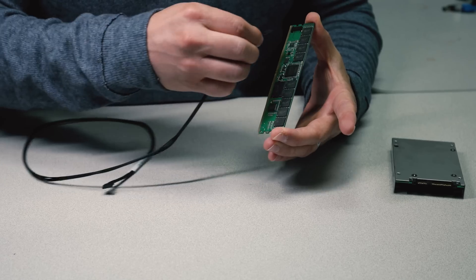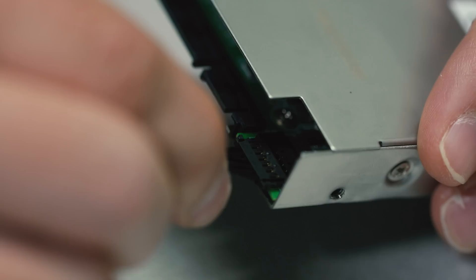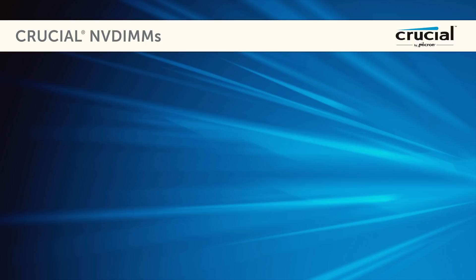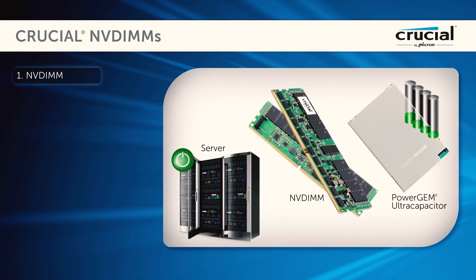Each NVDIMM module has an ultra capacitor which charges when a system powers on. Once the ultra capacitor is fully charged, the NVDIMM is ready to back up data in the event of power loss.